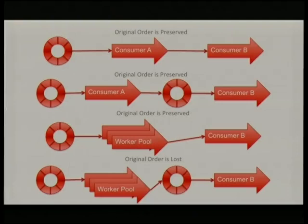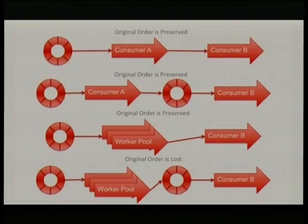If you don't care about order, the two-disruptor approach with a worker pool is fantastic — your best option. It will go as fast as it can. If one thread gets stuck, the other threads will keep publishing to the output ring buffer, so your ordering will change, but the downstream consumer can start processing events straight away.